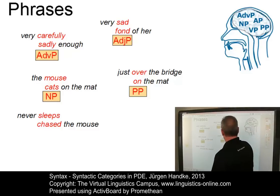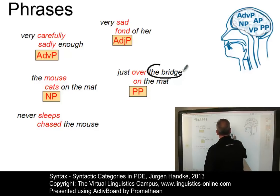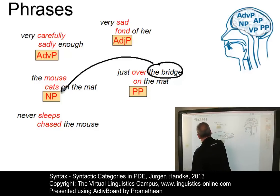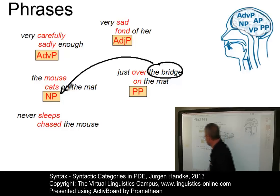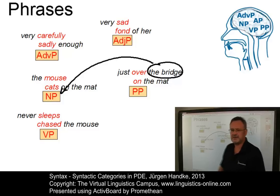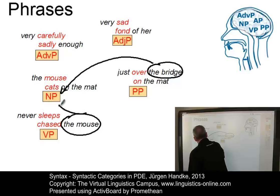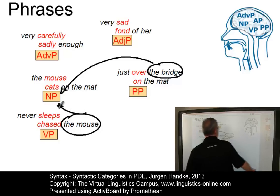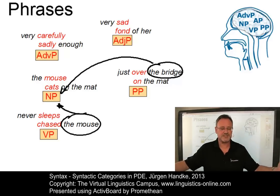Just over the bridge is a prepositional phrase with a pre-modifier and a post-modifier. Note that the bridge is itself a noun phrase — so you already see that phrases can be nested. The same applies to on the mat. And in a verb phrase, the verb constitutes the head and the noun phrase is part of the verb phrase — again, a nested construction.